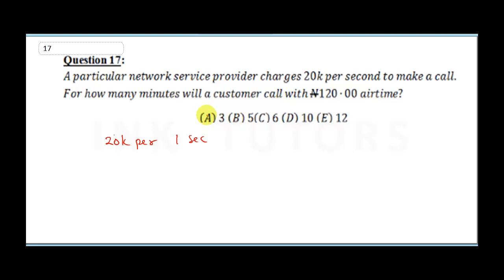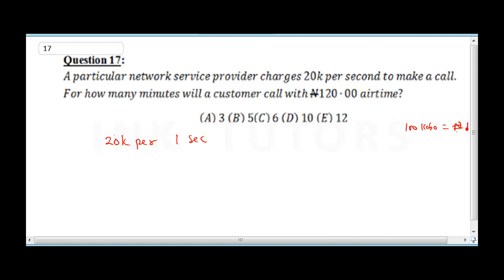The first thing you need to ask yourself is: how many kobo makes 120 naira? If you understand Nigeria's currency, 100 kobo makes one naira. So 120 naira will be 120 times 100, which equals 12,000 kobo.